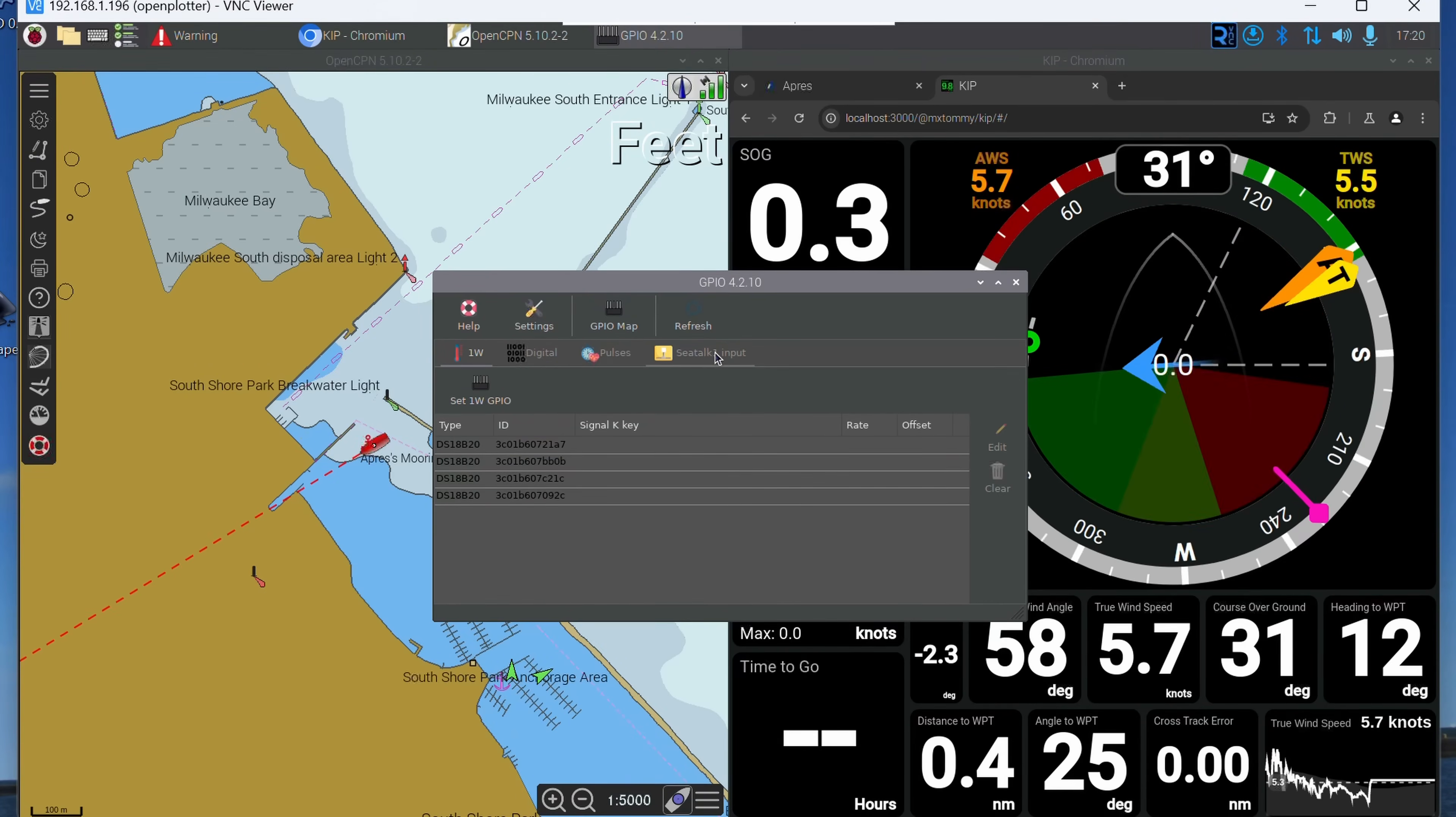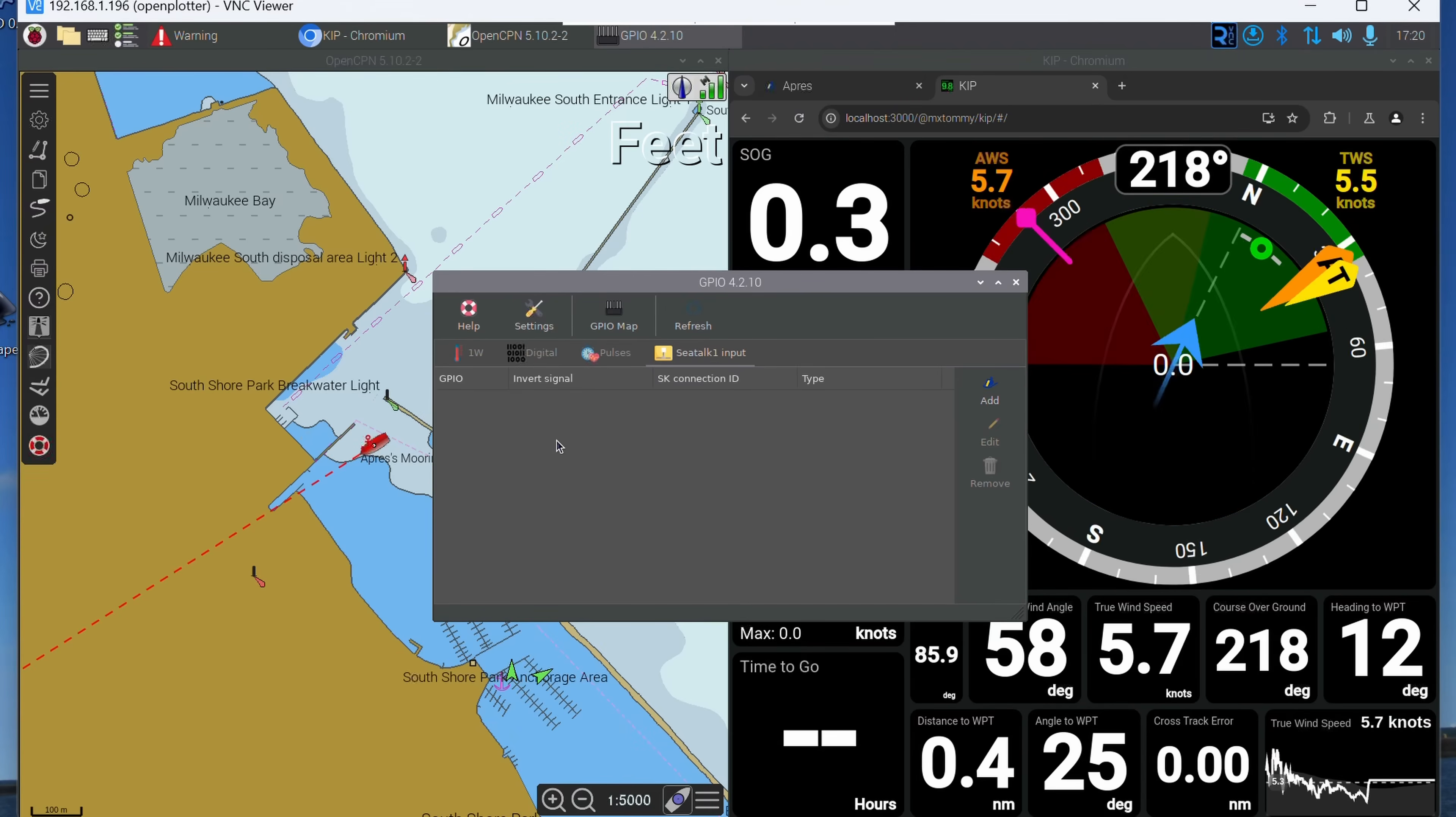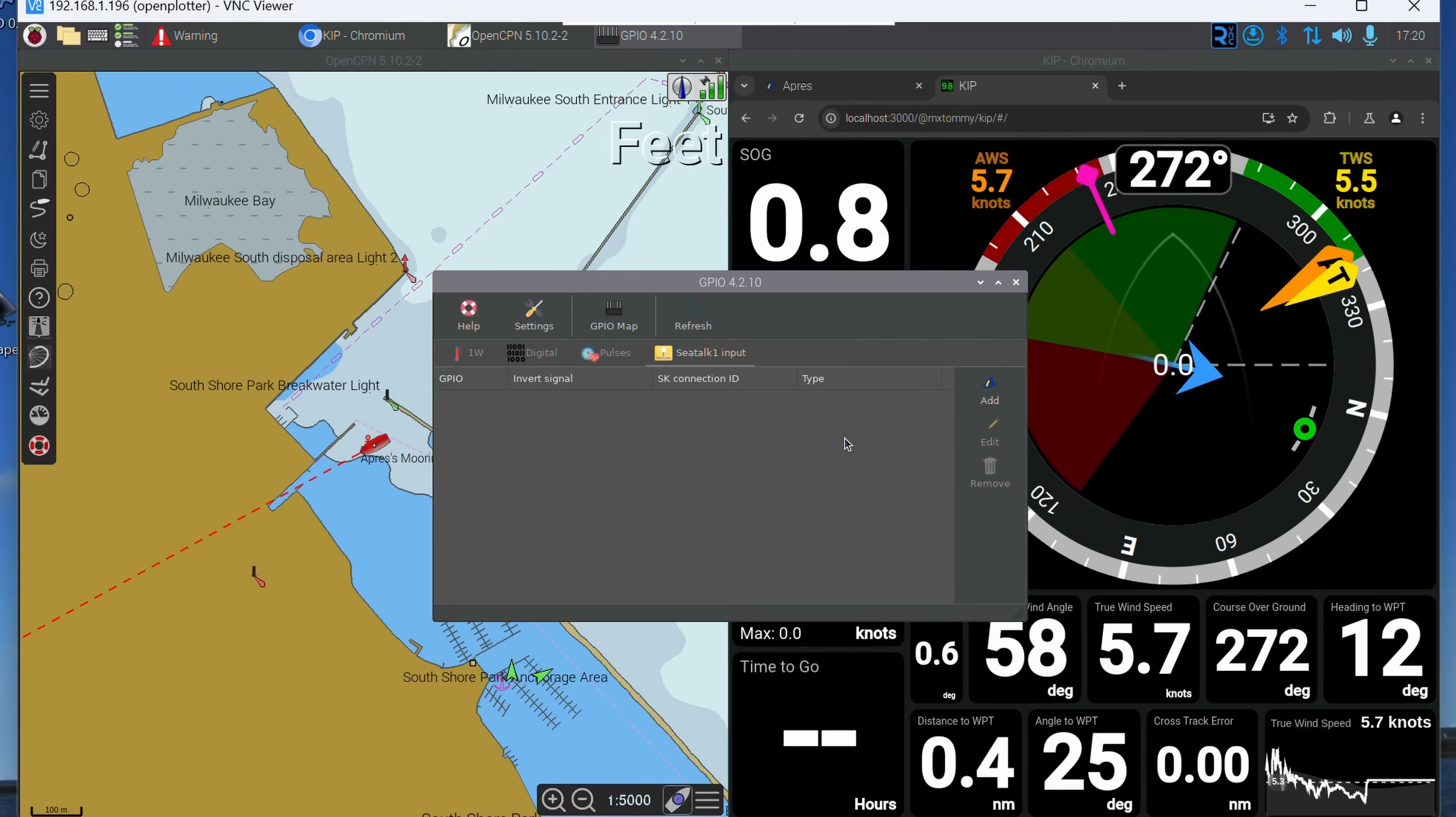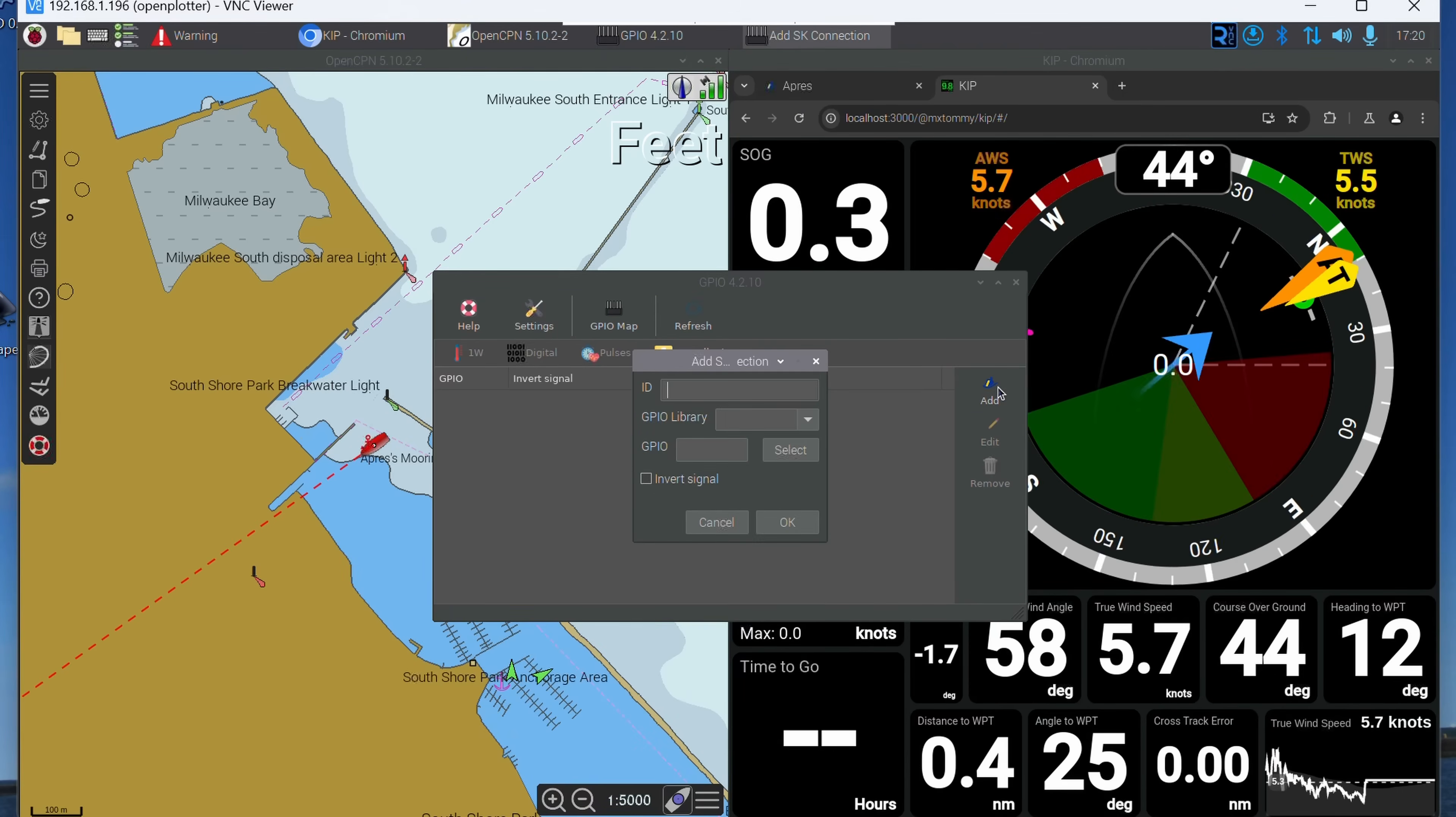Now we click on SeaTalk 1 input. If you haven't installed SeaTalk 1 before, this is what it will look like. You'll have nothing in there. I just deleted my entry so that I could redo it for this video. So you press add here.